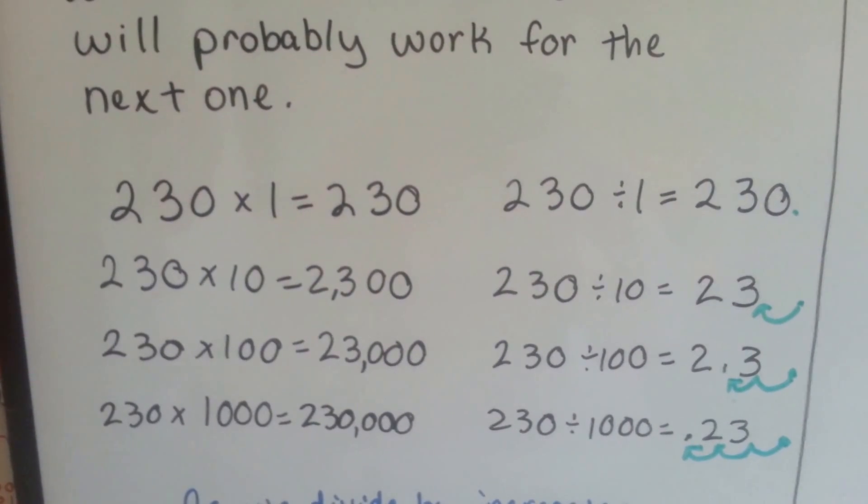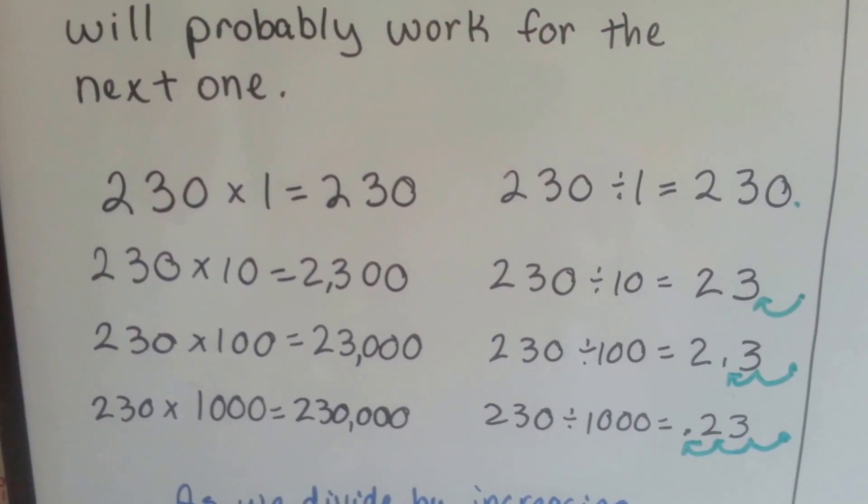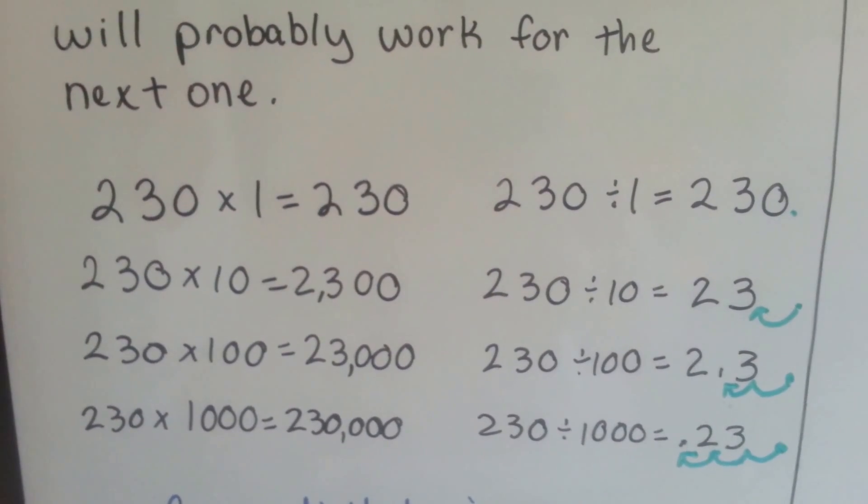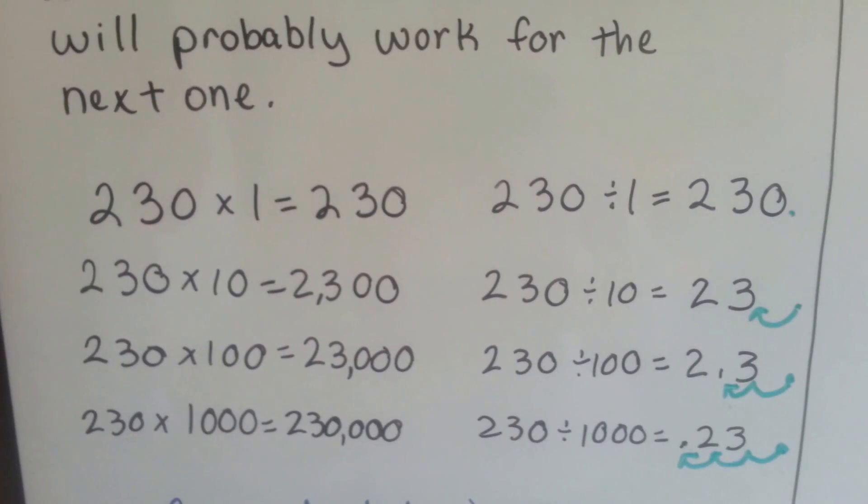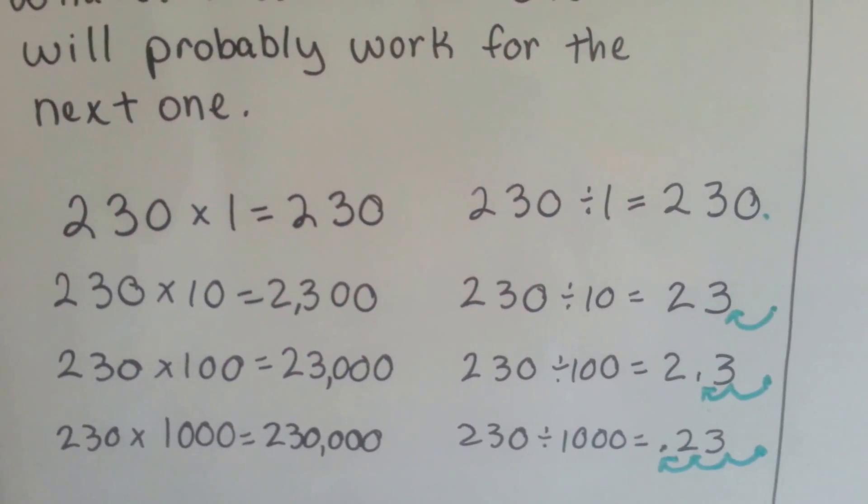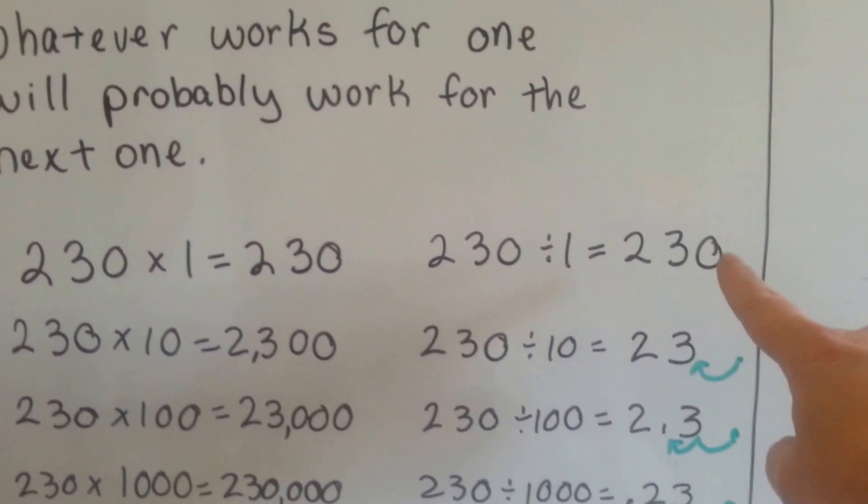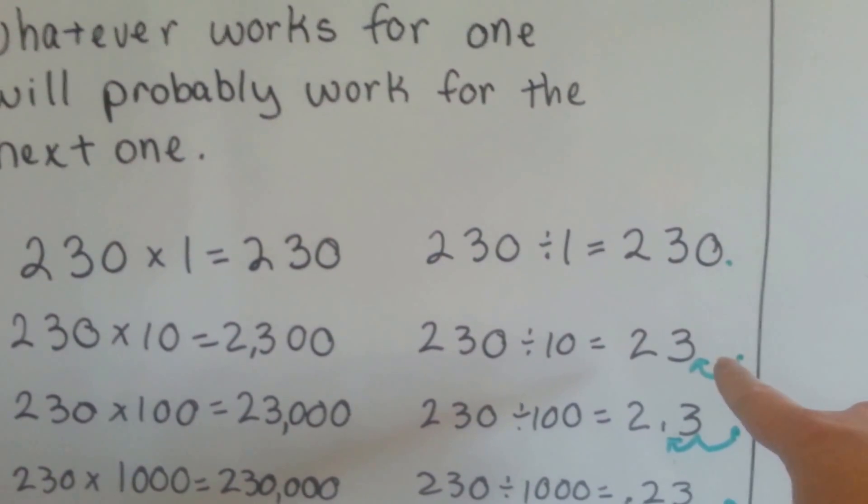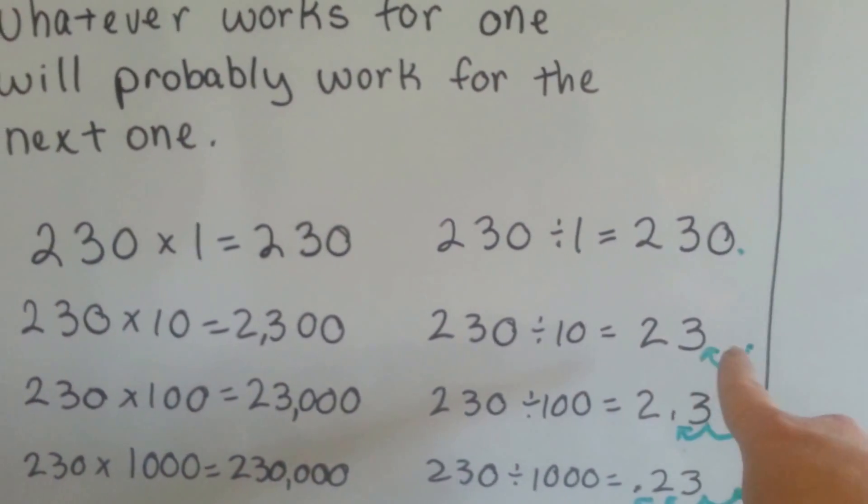230 times 10 is 2,300. We've now added a 0. 230 divided by 10 is going to take away a 0. It's going to just be 23. So the decimal point was on this side of the 0. Now the 0 is gone because we divided by 10. We took a 0 away.